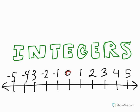with zero in the middle and the positive integers increasing as you move to the right on the number line, and it actually goes on forever and ever.